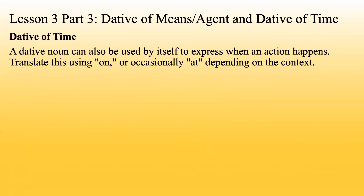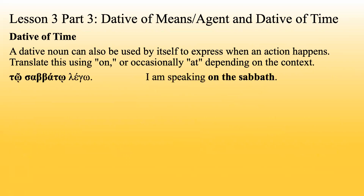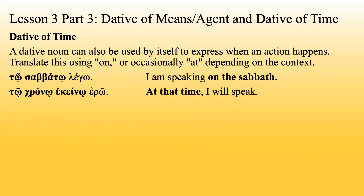Dative of time: a dative noun can also be used by itself to express when an action happens. Translate this using 'on' or occasionally 'at,' depending on the context. For example, 'to sabbato lego' — 'I am speaking on the Sabbath.' It's not that I'm speaking to the Sabbath; that doesn't make any sense. I'm speaking on the Sabbath.